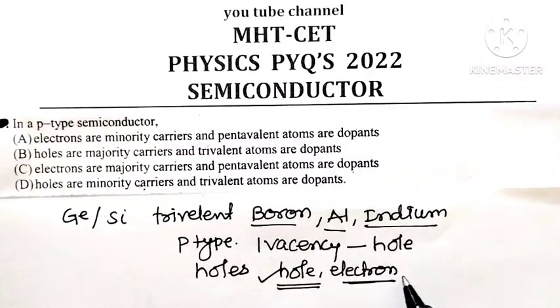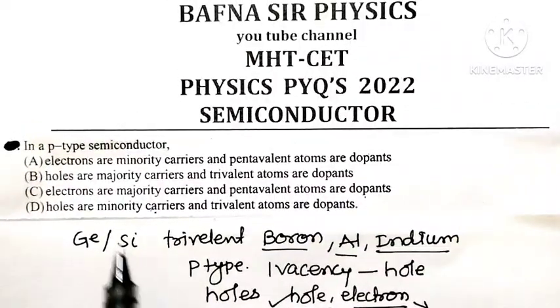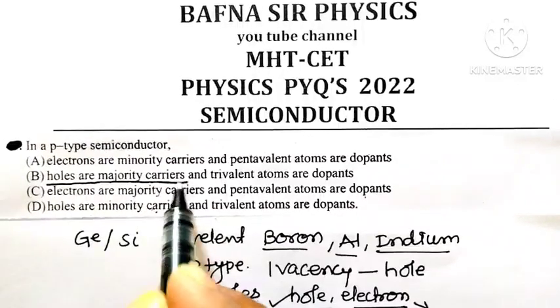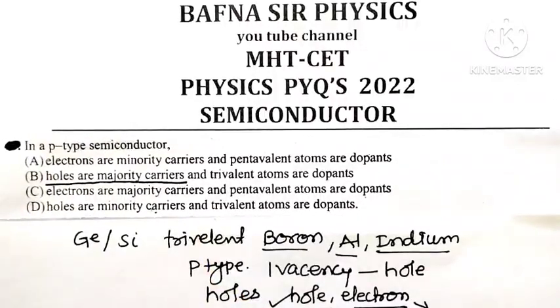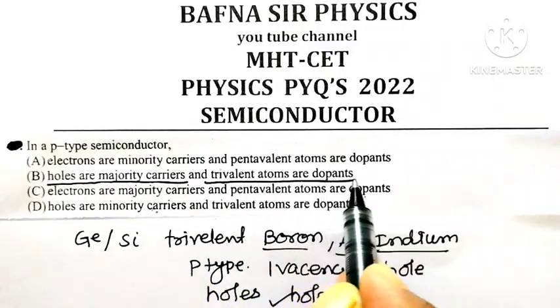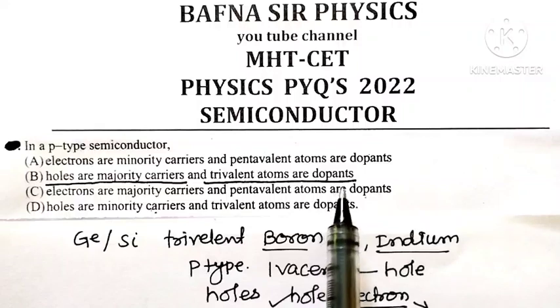charge carrier while electrons are the minority charge carrier. So remember, for P-type semiconductor, holes are majority charge carriers and trivalent atoms are dopants. Dopant means the process of adding an impurity atom to a pure germanium crystal. That impurity atom is called a dopant.